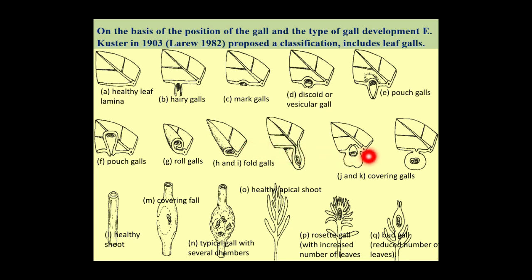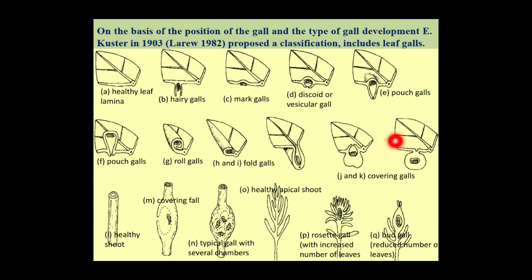The next type of gall is covering gall. In this type of gall, the insect becomes encapsulated within the gall. There is also an opening of the gall called ostiole, and it opens to the exterior in coccoid galls. Sometimes this ostiole is absent, as in synept gall.